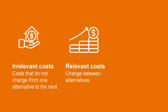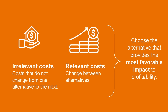Relevant costs and benefits, on the other hand, are the ones that change between alternatives. For example, the additional revenue that the company would earn from accepting the special order would be relevant to the decision. Ultimately, the company is likely looking to choose the alternative that results in the most favorable impact to the profitability of the organization.